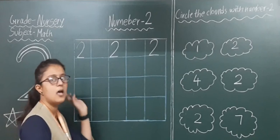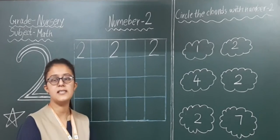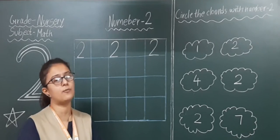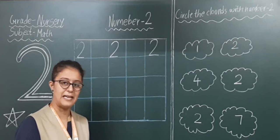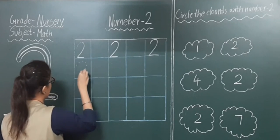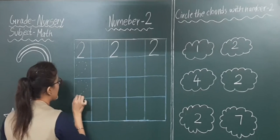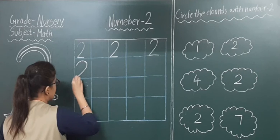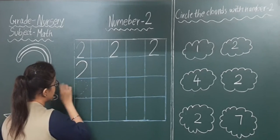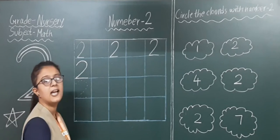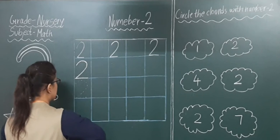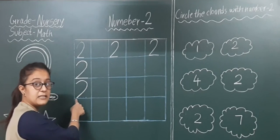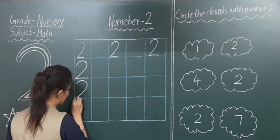So now we will write in the boxes. Writing in these boxes can feel a bit difficult, so I will make some dots for you. Parents, please make some dots for your child so it will be easier for them to write the numbers. First of all we will make some dots and then you have to trace on those dots. First of all make one curve line, that curve line should touch the bottom line, and then one sleeping line.